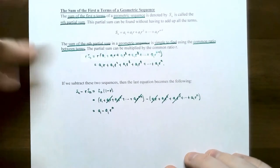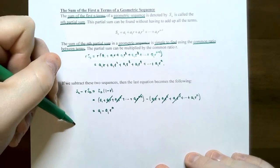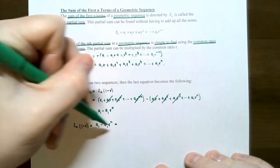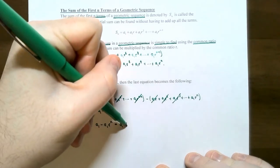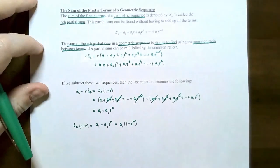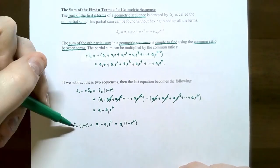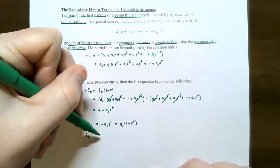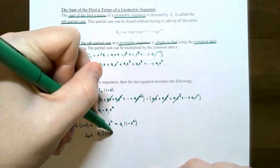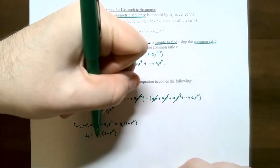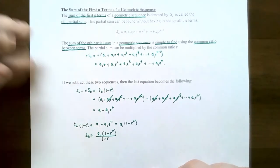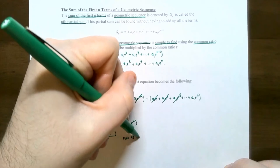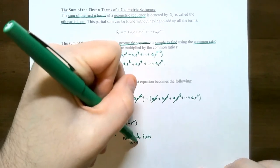Putting everything together, S sub n times (1 minus r) equals a sub 1 minus a sub 1 r to the n. You can factor out a sub 1 to get a sub 1 times (1 minus r to the nth power). Dividing both sides by (1 minus r) gives the formula for S sub n: it's the first term a sub 1 times (1 minus r to the nth power) divided by (1 minus r). This is the sum of the first n terms in a geometric sequence.